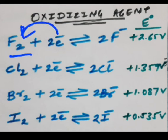That means it can easily undergo reduction, and since it can easily undergo reduction, it is a strong oxidizing agent.